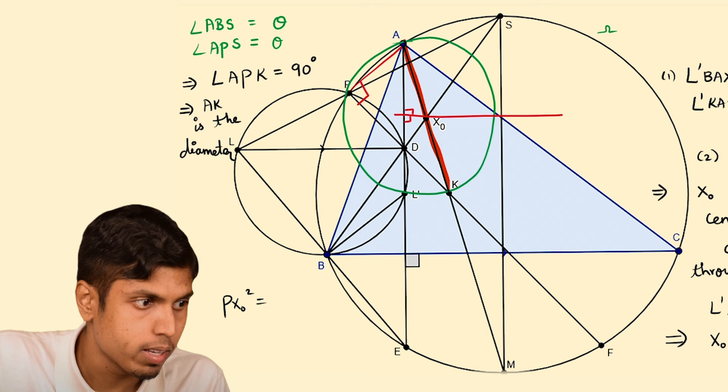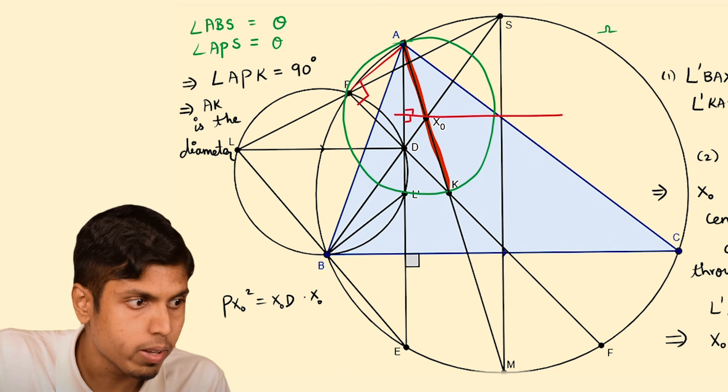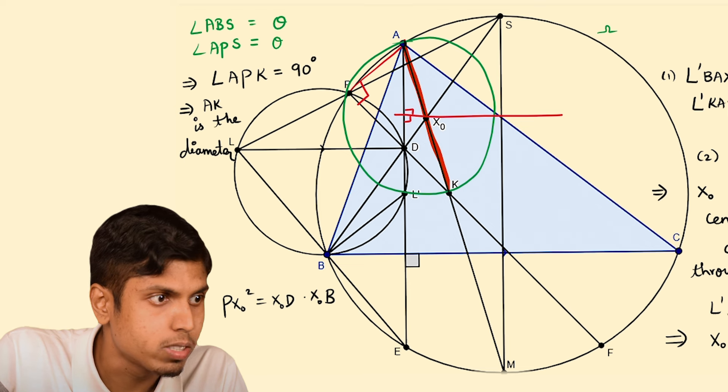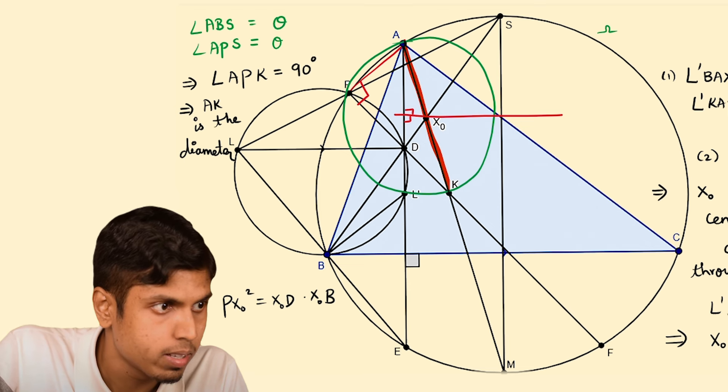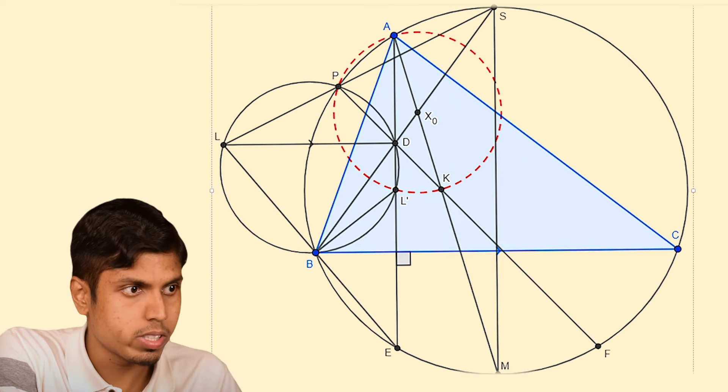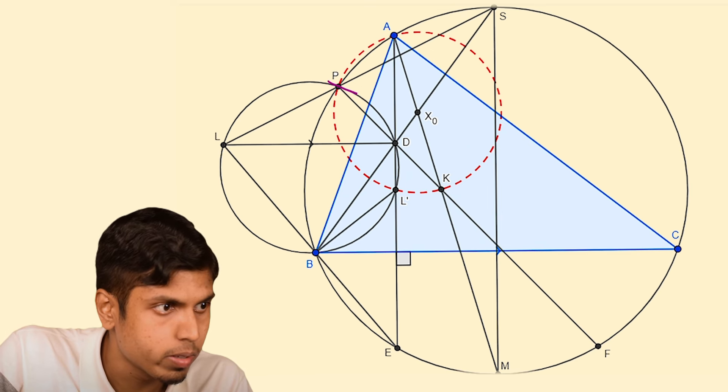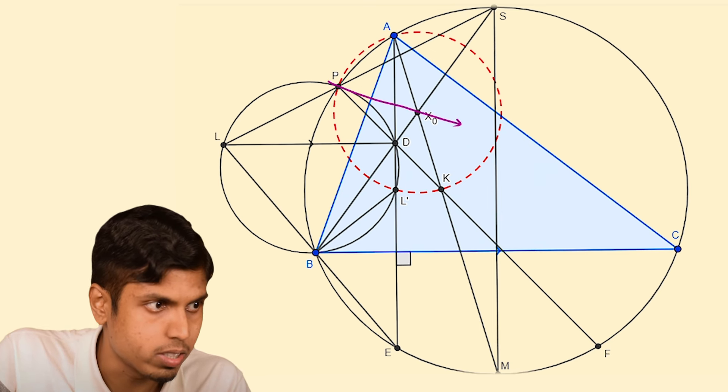Therefore PX0² equals X0D times X0B, which means PX0 is the tangent to circle omega at P. This is illustrated in the final diagram where the points are concyclic and PX0 is the tangent. There are several approaches to solve this problem, and I hope you enjoyed this solution. You can add your ideas in the chat box. We will also provide the notes in the description. Happy learning everyone, bye.